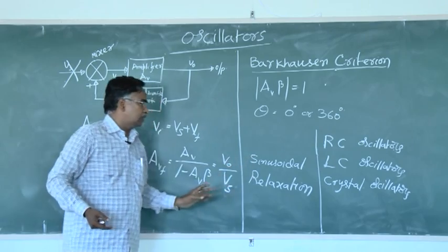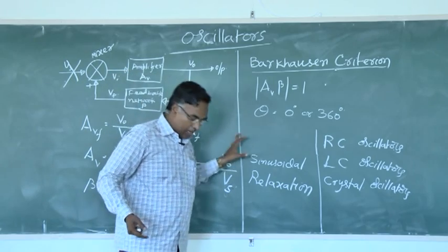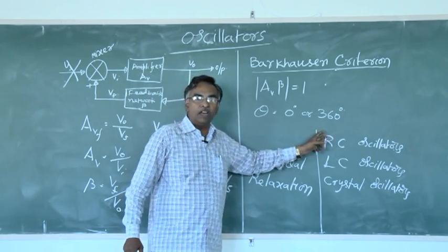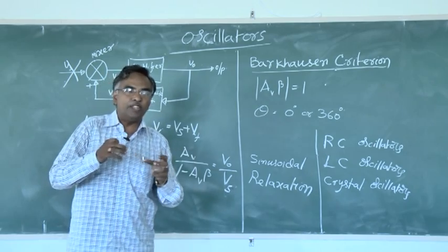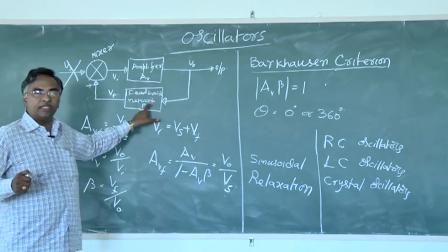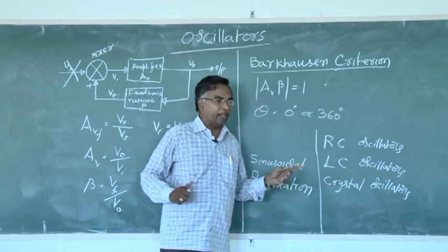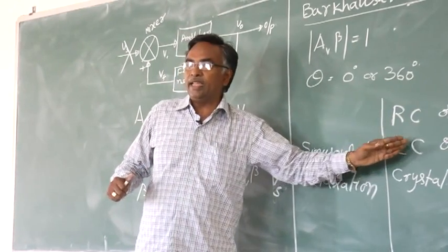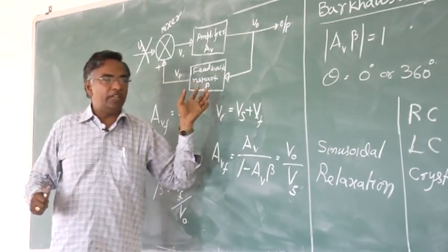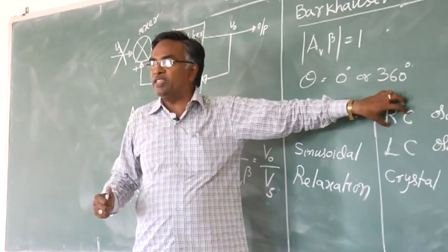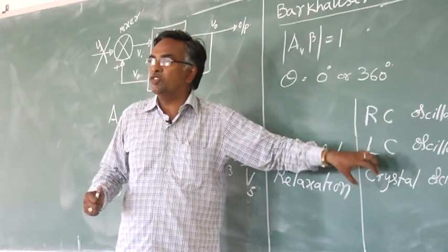Relaxation oscillators are also called non-sinusoidal oscillators. Sinusoidal oscillators are of three types: RC oscillators, LC oscillators, and crystal oscillators. These are classified depending upon the elements used within the feedback network. RC uses resistors and capacitors, LC uses inductors and capacitors, and crystal oscillators use crystals in the feedback network. RC oscillators produce low frequency oscillations, LC oscillators produce high frequency oscillations, and crystal oscillators also produce high frequency.